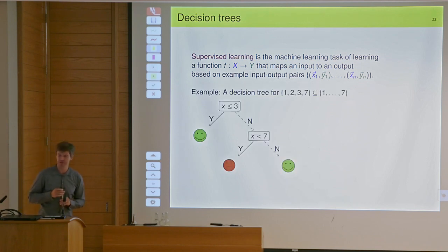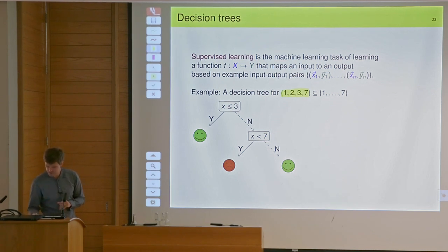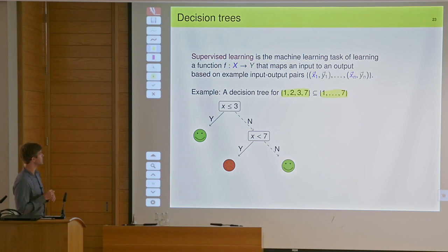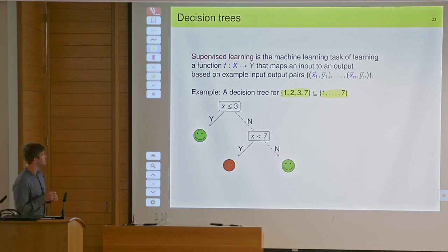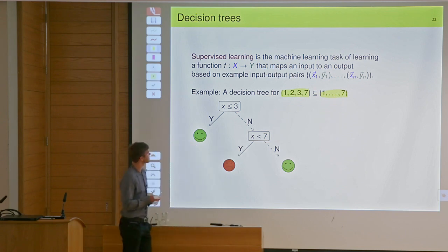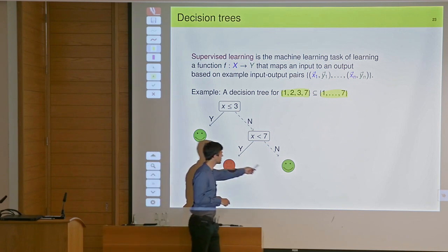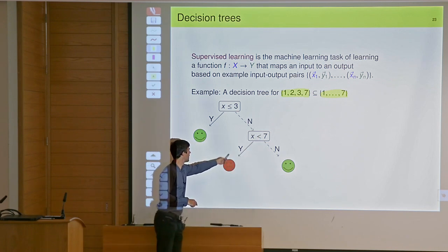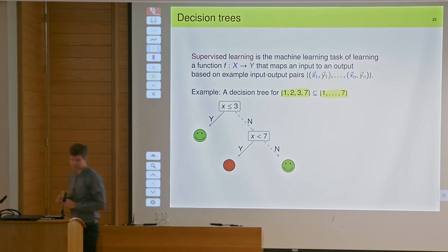Here is an example of a decision tree. I want to learn a set. This is my domain. This is how I read the tree: say we only have one variable x. If x is smaller than 3, then it's in the set. If it's not smaller than 3, then we check: is x smaller than 7? Well, if it's not smaller than 7 — so it's actually 7 — then I am in the set. Otherwise I am unhappy, so I'm not in the set. So this is instead of yes and no. This is a tree capturing this set.